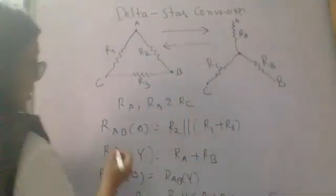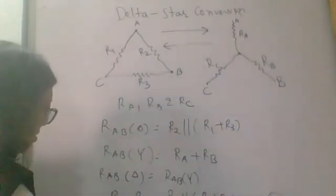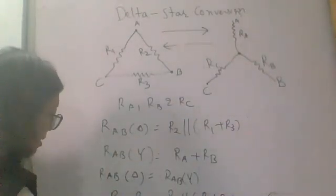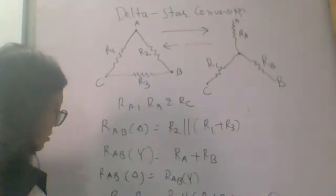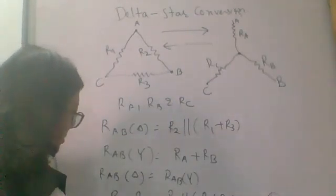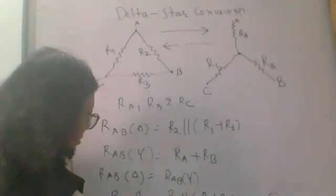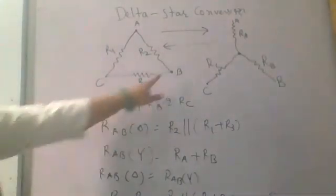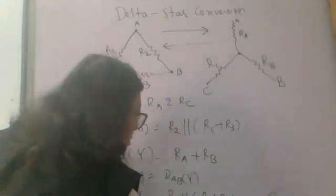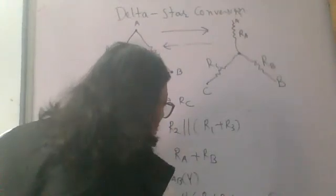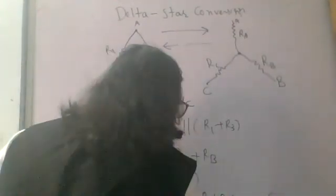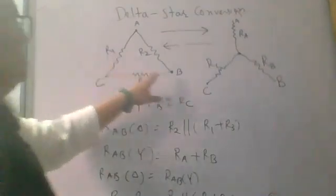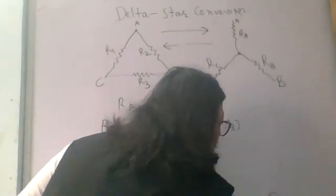Now for equation number 2. The resistance between RBC in delta and resistance between RBC in star is equal. RBC in delta is R3 parallel (R1 plus R2), which equals RB plus RC in star. This is equation number 2.